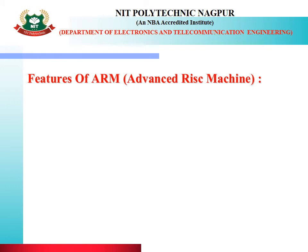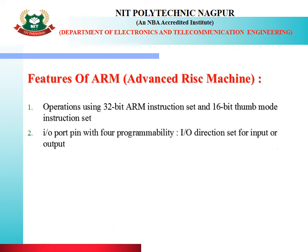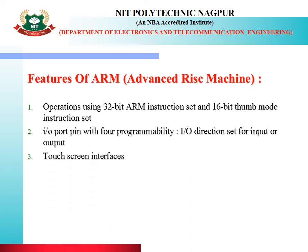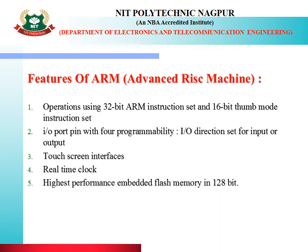Next part is the features of ARM. ARM stands for Advanced RISC Machine. ARM consists of operations using the 32-bit ARM instruction set and 16-bit Thumb mode instruction set. Every controller has an instruction set for performing different operations. Input-output pins have 4-mode programmability for setting direction as input or output. It is having touch screen interfaces for developing projects. It is having the real-time clock, enabling real-time applications. Highest performance embedded flash memory is 128-bit.